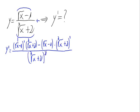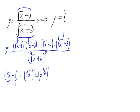Now let's calculate these two derivatives. Let's begin with the square root of x minus 1. The derivative of the constant 1 is 0, so we just need the derivative of the square root of x. Since this is x raised to 1 half, by the power rule the 1 half goes in front: 1 half times x raised to 1 half minus 1.